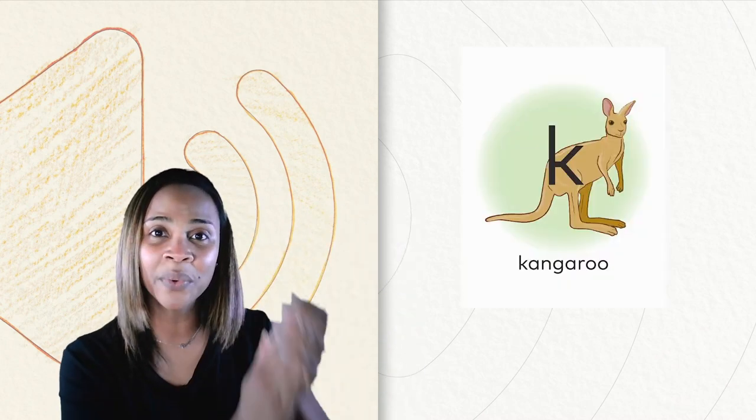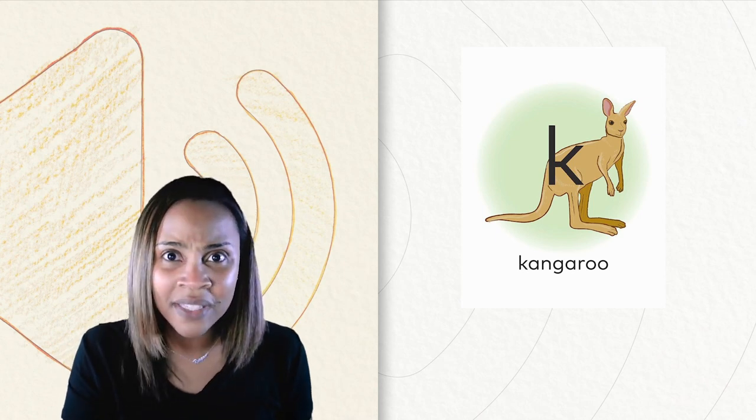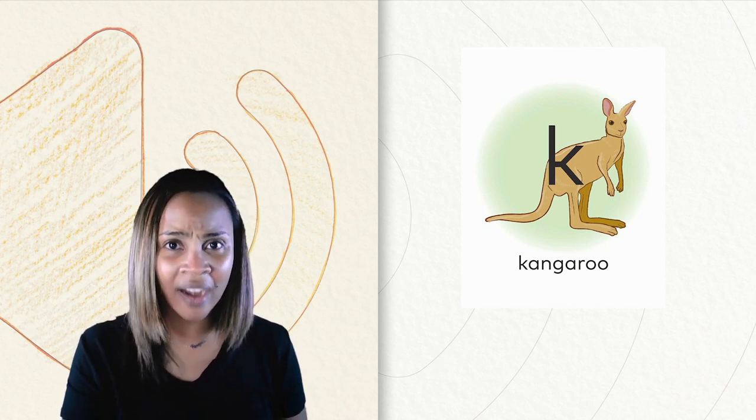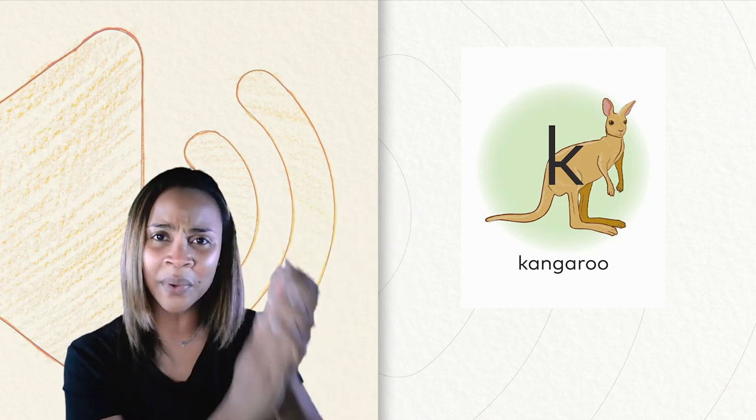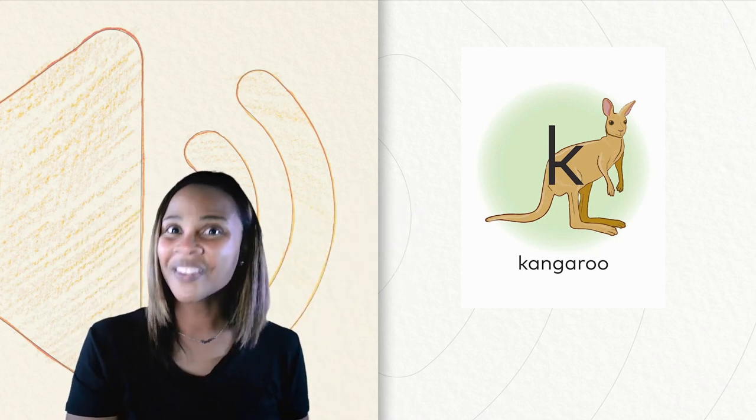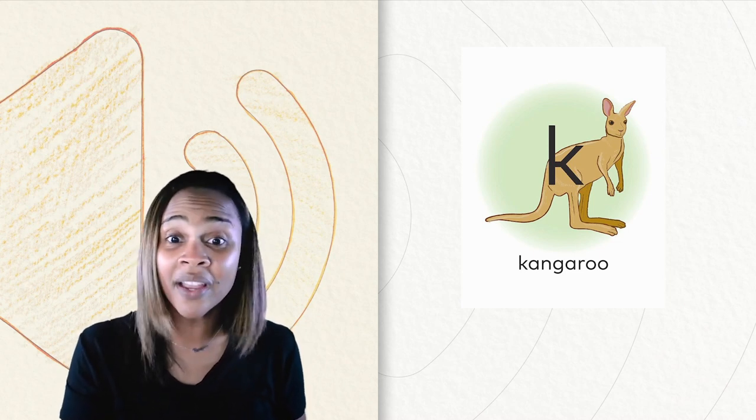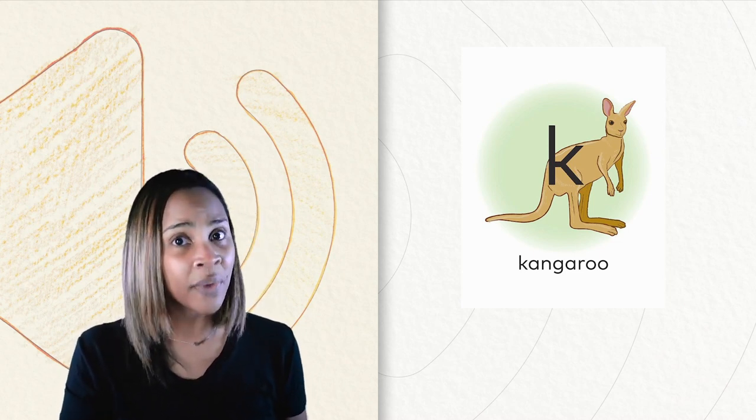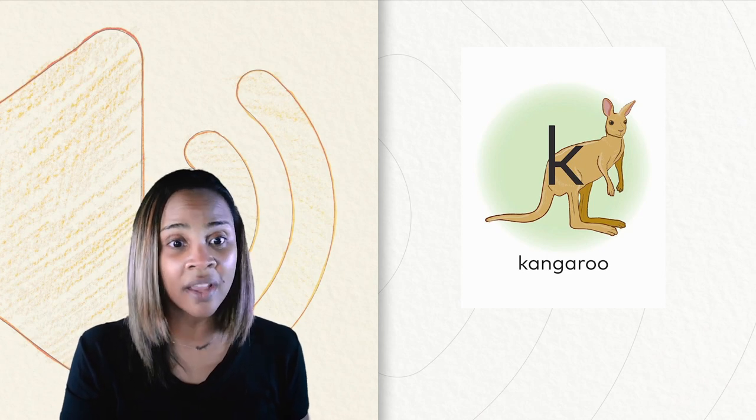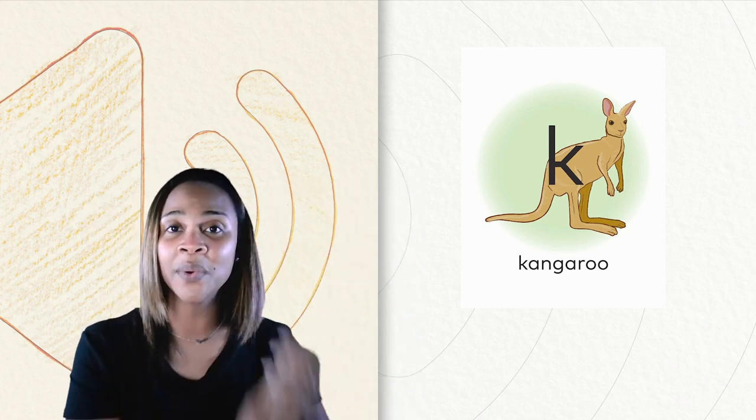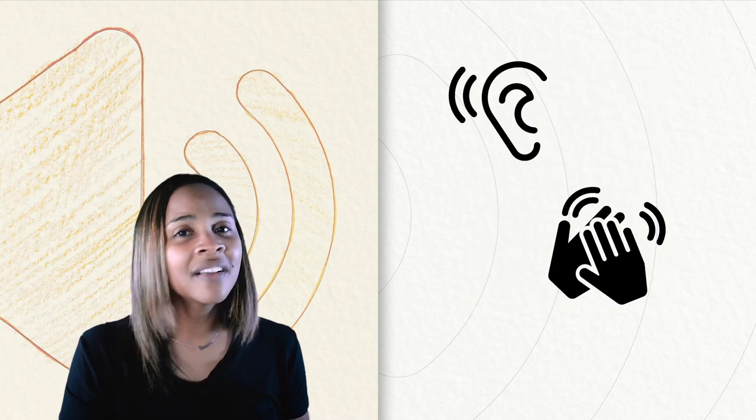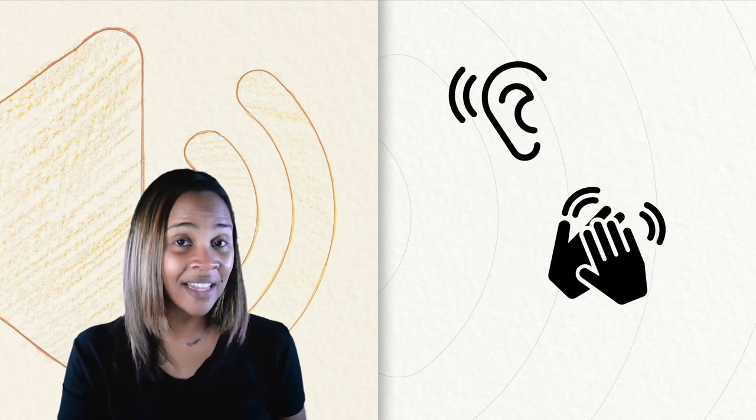Kangaroo. How many syllables did you hear in that word? Kangaroo. Yes. There are three syllables in the word kangaroo. That means there are three beats in that word. Kangaroo. Wow. How about we play a little game?